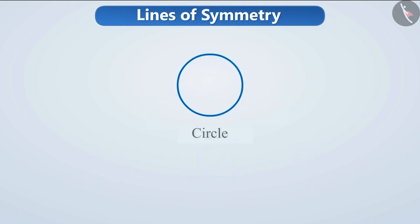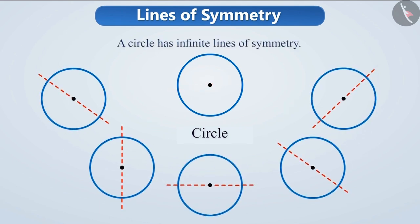But, if we look at a circle, any line passing through its center is a line of symmetry. And, since there are infinite number of lines which can pass through the center, hence, a circle has infinite lines of symmetry.